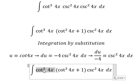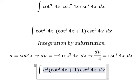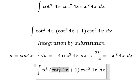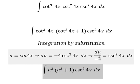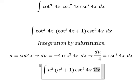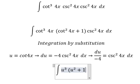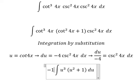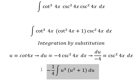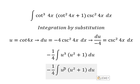This one we change to u, and we have u³. This one we change to u². This one we change by du over negative 4. So we have negative 1/4 times the integral of u³(u² + 1)du.